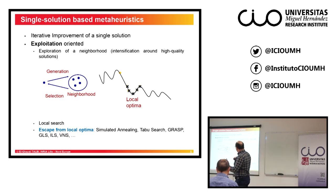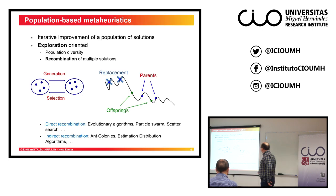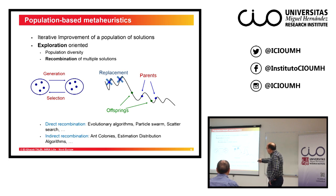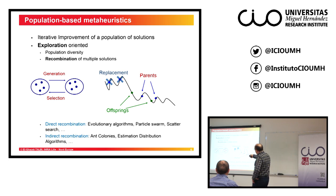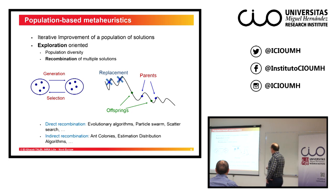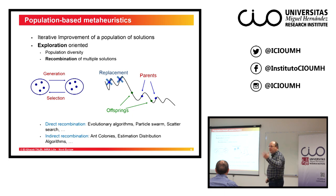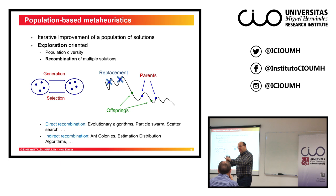In single-solution-based metaheuristics or local search, you start from a single solution, generate a neighborhood, select a solution from the neighborhood, and iterate. These algorithms generally converge to local optima. This is why, in the last 20 years, many algorithms have been designed to escape from local optima: simulated annealing, tabu search, variable neighborhood search, GRASP, iterative local search, etc. Population-based methods improve a population of solutions, starting from a random population, with good diversity — they are more exploration-oriented. Algorithms include evolutionary algorithms, particle swarms, scatter search, ant colonies, and EDA.